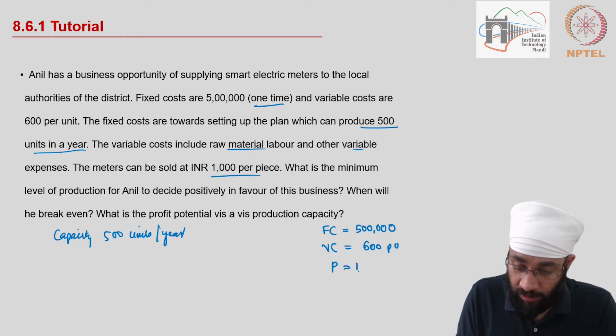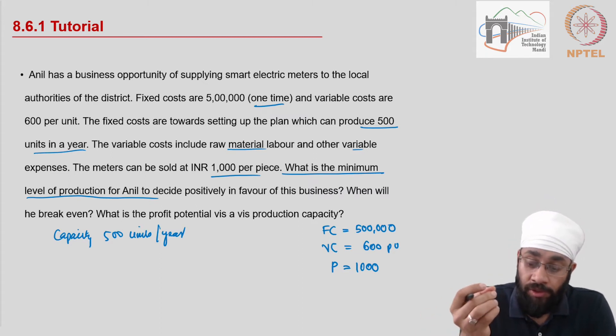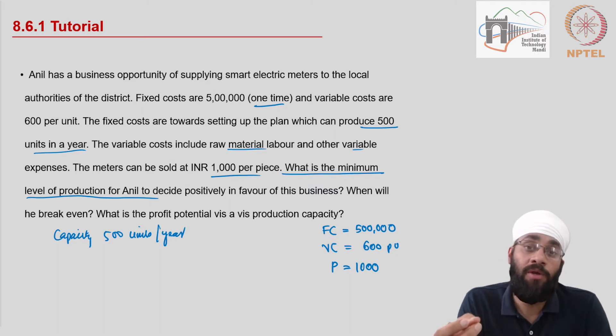You have price which is 1,000 per piece. So the first question is: what is the minimum level of production for Anil to decide positively in favor of this business? What does it mean? It means the person should be able to say, okay, I'm taking this opportunity up. When will that happen? When you are in profit. So you want to know when is it that you are going to be in profit, what is the minimum level of production.